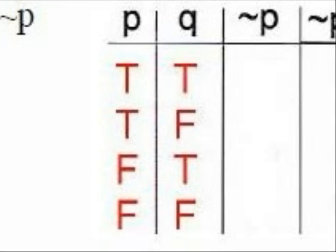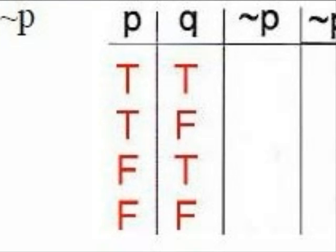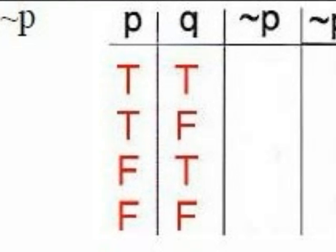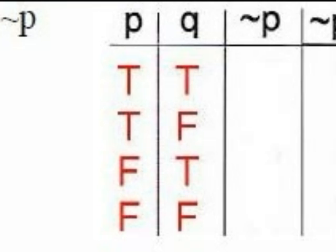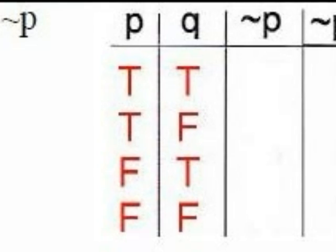And finally we need a column for the entire statement. The truth values in each column depend on the truth values for P and Q. Since this compound statement consists of two letters, there are going to be 2 to the power of 2, or 4 truth cases. We could have P and Q both true, or P true and Q false, or P false and Q true, or both P and Q false. It's highly recommended to consistently use this order so you can compare your answers with the back of the book.